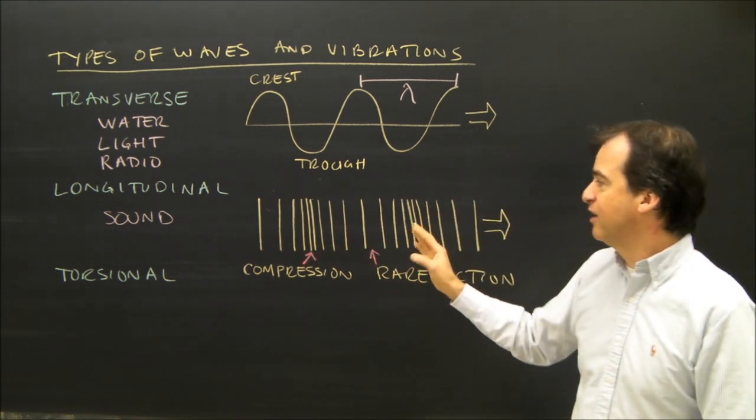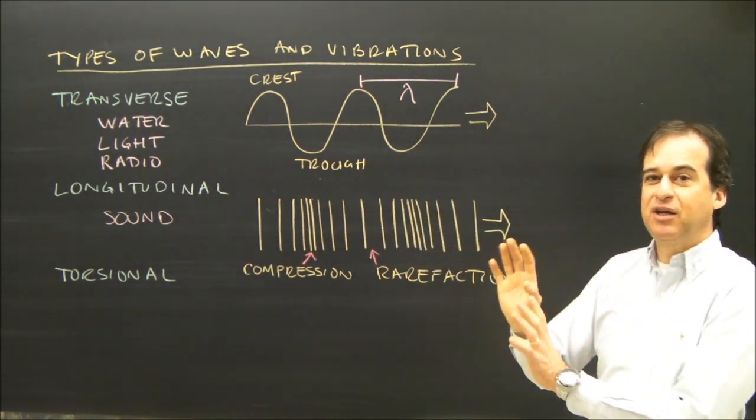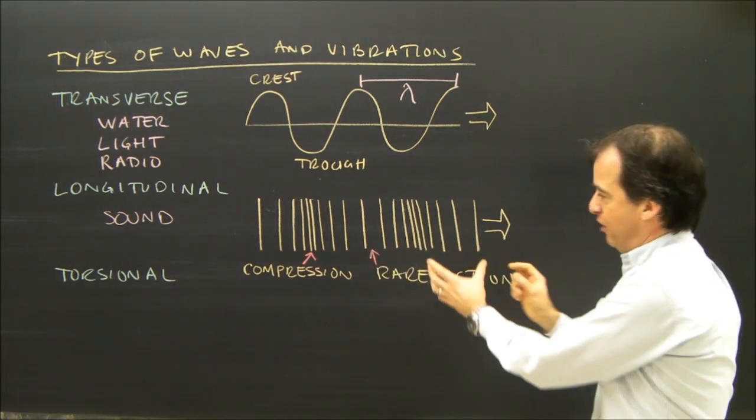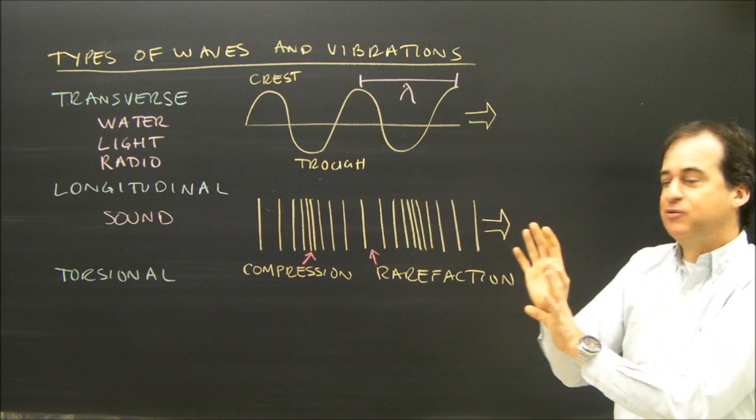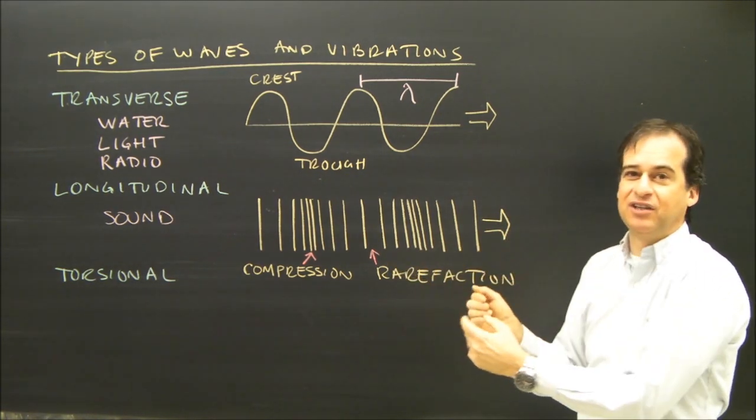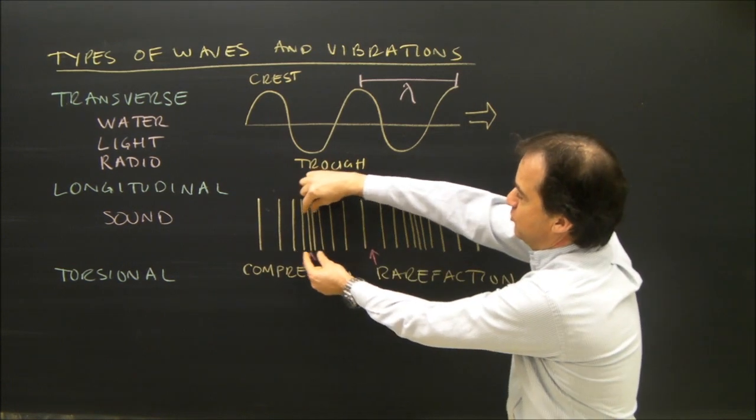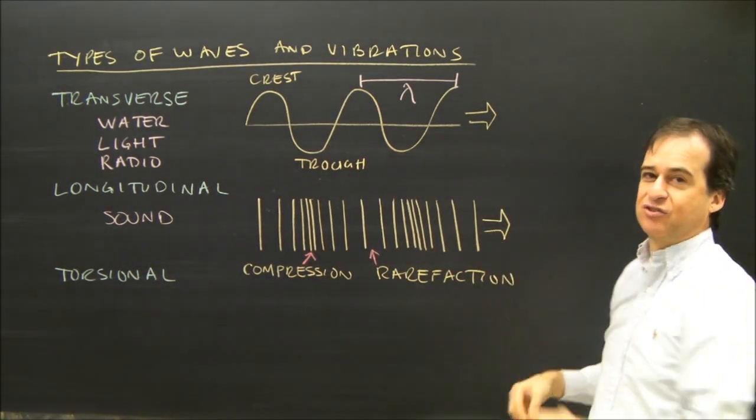And the way they're created is, the compressions and the rarefactions, a speaker will vibrate to create sound. When it pushes the air, it compresses it, and when the speaker moves back, it pulls and spreads out the air. So it sends these vibrations through the air. So this compression will travel through the air in this direction.